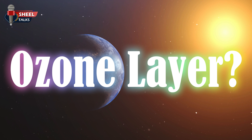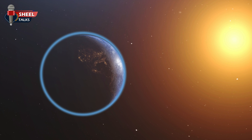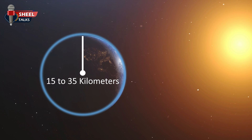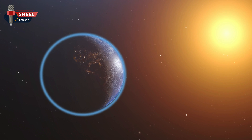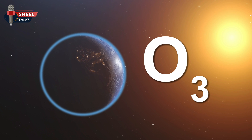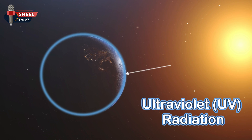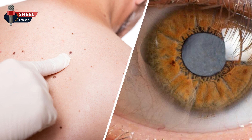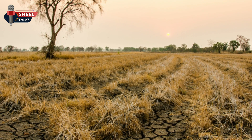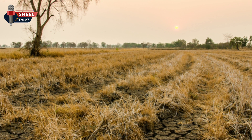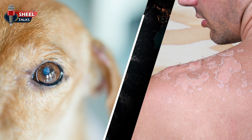What exactly is the ozone layer? The ozone layer is a layer in the atmosphere, located about 15 to 35 kilometers above the Earth's surface. This layer is made up of ozone gas molecules, with the chemical formula O3. The primary function of the ozone layer is to block the ultraviolet rays coming from the sun, which are a major cause of many health issues. If these rays were to directly reach the Earth, they could harm the environment and cause various eye and skin related diseases in humans and animals.